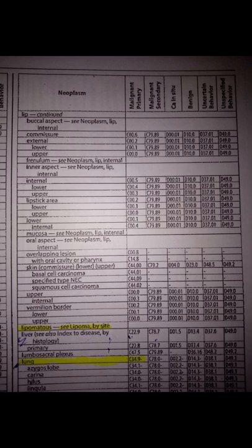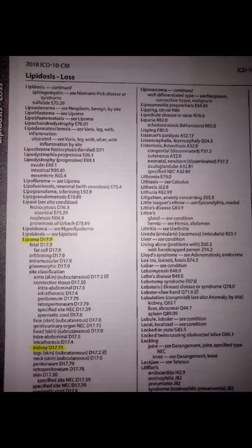Next question: lipoma of kidney. Note that the suffix '-oma' can indicate cancer in medical background — lipoma, adenoma, etc. For lipoma of kidney, look up the main term 'lipoma' in the alphabetic index. Under lipoma, find the subterm 'kidney': the code is D17.71.